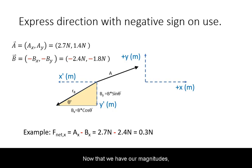Now that we have the magnitudes, we need to use the negative sign as the direction once we use them to solve a problem.